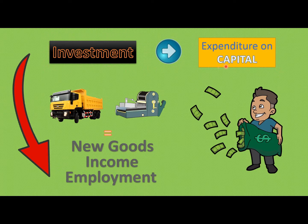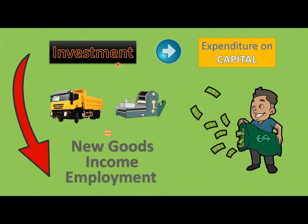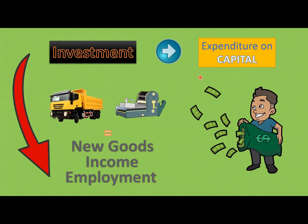In economics, if you want to obtain capital goods, you will need expenditure on capital goods — this expenditure on capital goods is what we call investment. The implication of investment is that new goods are produced, new income is generated, and further employment is generated. So, the expenditure on capital goods leads to production of goods, income is generated, and employment is generated.